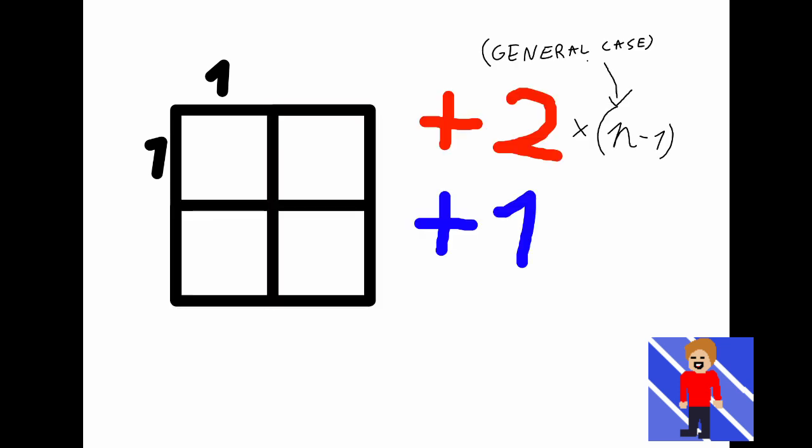Because on these 2 sides there is always going to be the same amount, they will always be even if we add them together. But there is always 1 extra in the corner, so the final will always be odd.